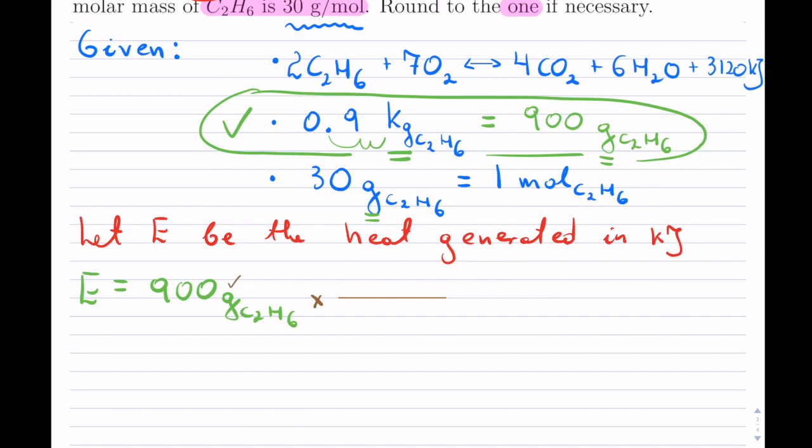So I'm going to proceed with these cancellations. So I have grams on top. So I will want to put it on the bottom. So grams of C2H6. So that these two cancel.